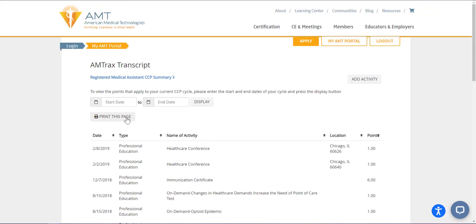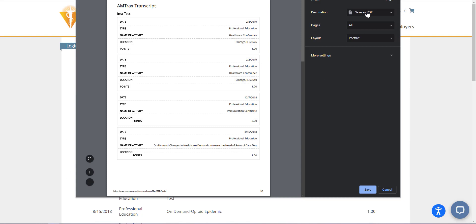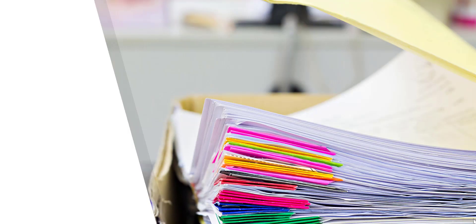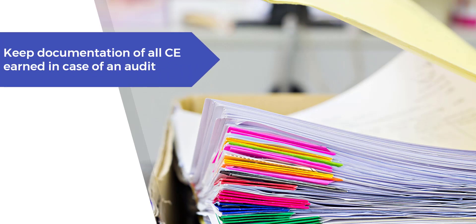You can then print the page or save the transcript as a PDF. Once you earn and enter the required number of CCP points for your cycle, you are automatically marked as compliant. You do not need to complete or submit any paper forms. However, please remember to keep a documented record of the courses or continuing education you attend if it is outside of the courses in the AMT Learning Center. You will need this documentation in case you are randomly selected for the annual audit by AMT.